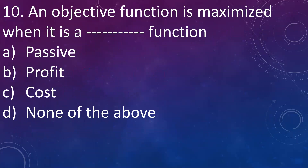Next question: an objective function is maximized when it is a dash function. A. Passive, B. Profit, C. Cost, D. None of the above. Answer is profit — the objective function is maximized when it is a profit function. Whenever we are dealing with profit, we aim to maximize it; and whenever we are dealing with cost, we aim to minimize it. So whenever it is a profit function, we maximize Z; and whenever it is a cost function, we minimize Z.